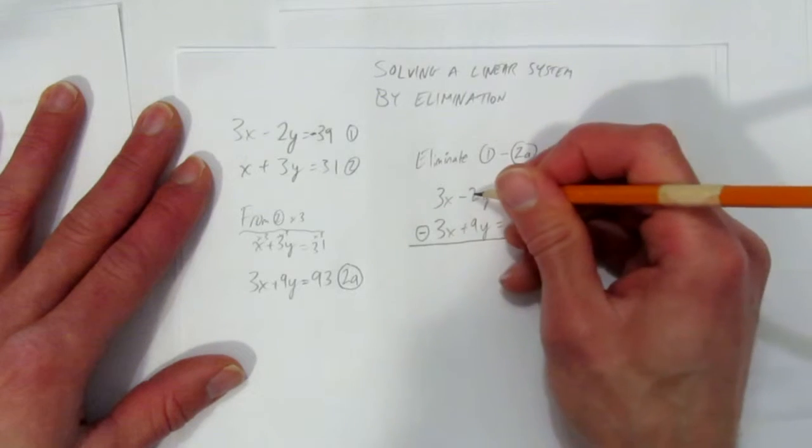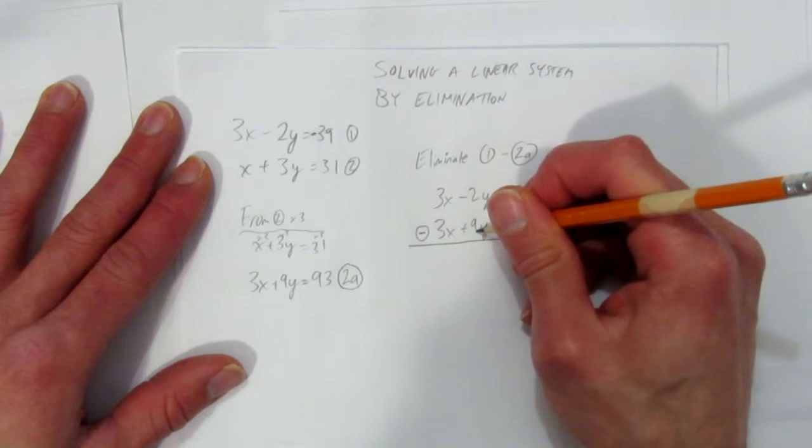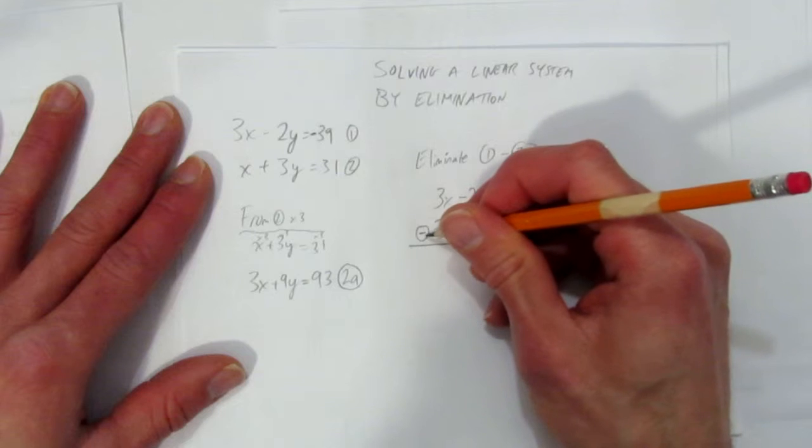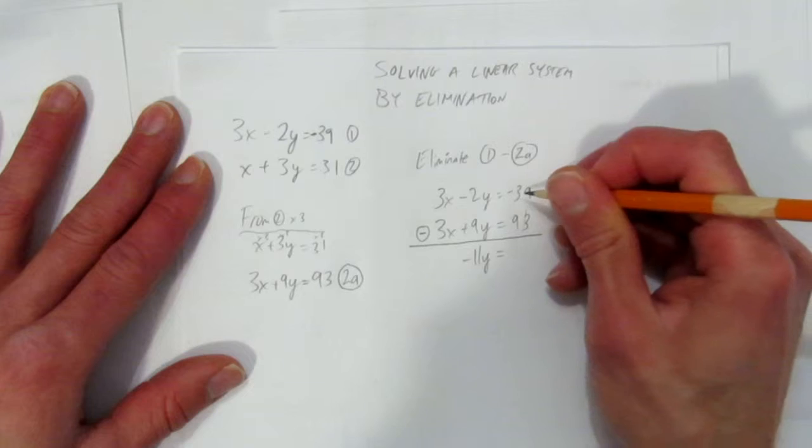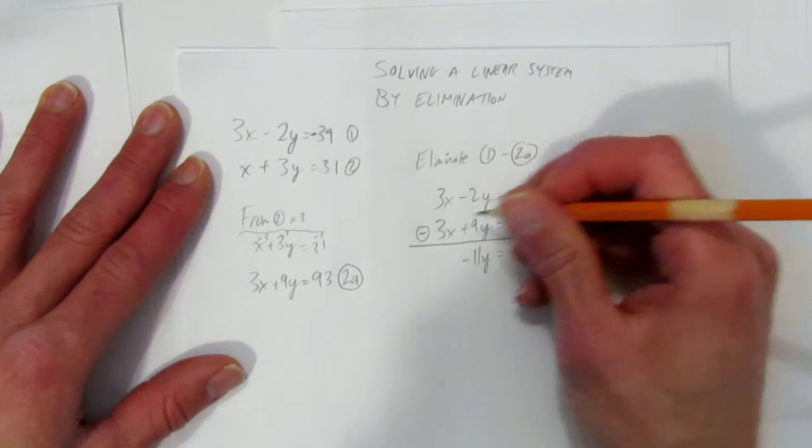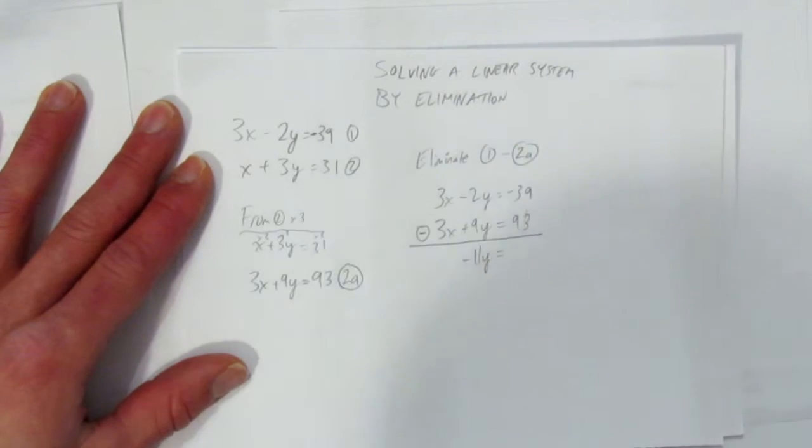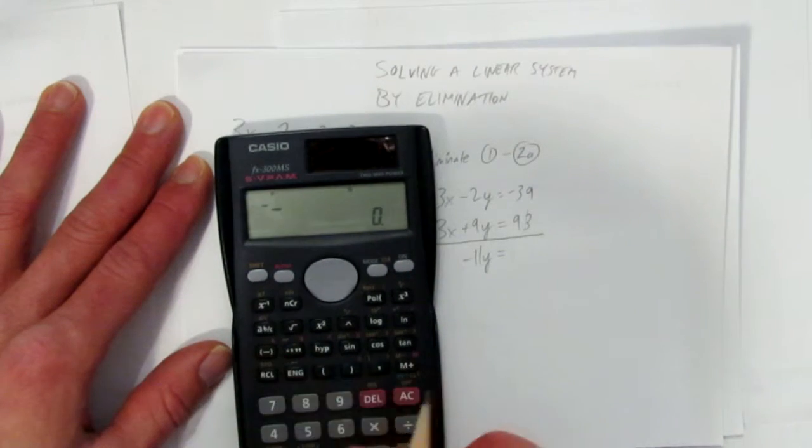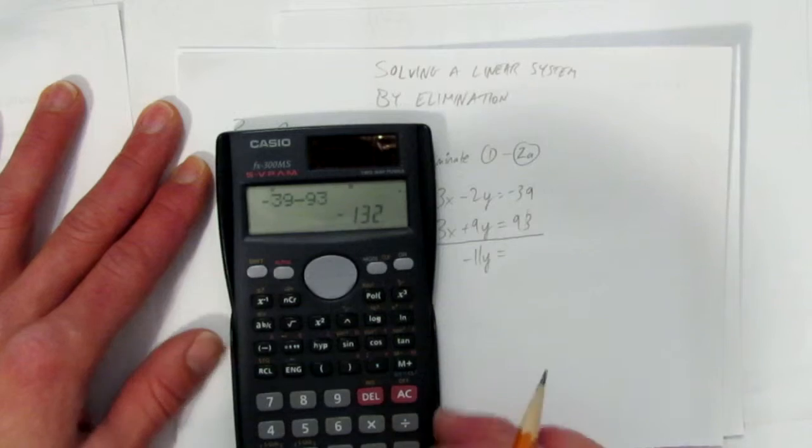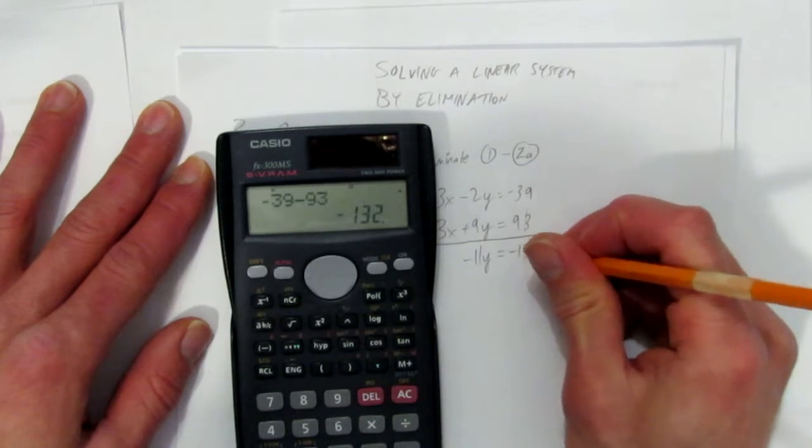Negative 2 take away plus 9 is the same as negative 2 take away 9, which is negative 11y. And negative 39 take away 93, you can do that in your head, but I won't judge you if you use your calculator. Negative 39 take away 93, you get negative 132.